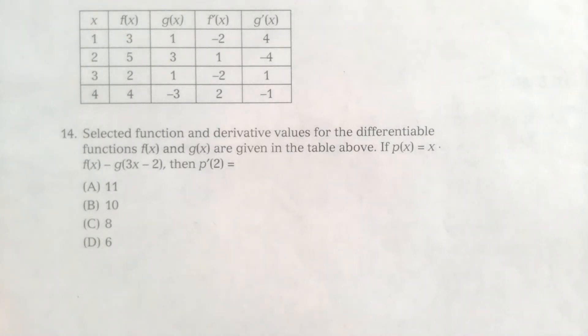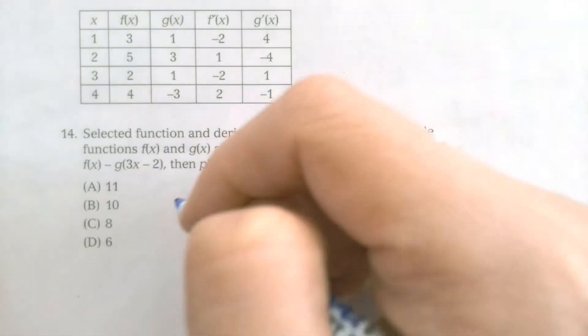It's important to be prepared for general applications of each of these rules where they don't give you a specific function, but maybe define a function like this where p of x equals x times f of x minus g of 3x minus 2, and then they want you to evaluate p prime of 2 using the table.